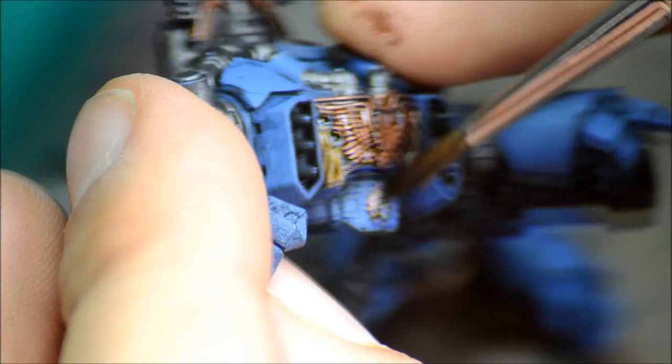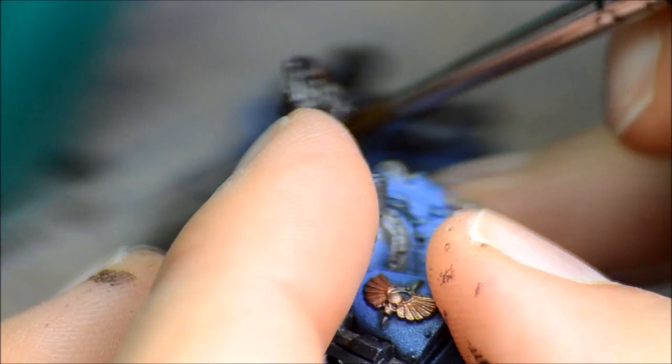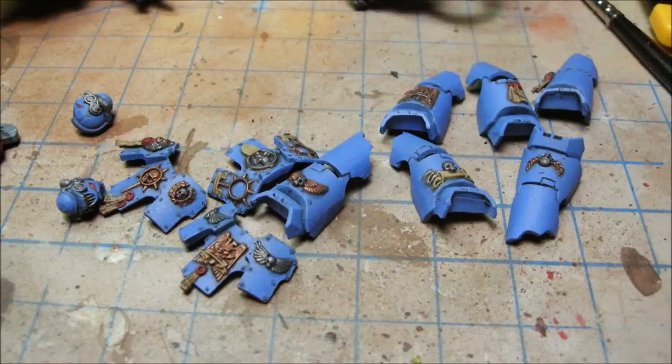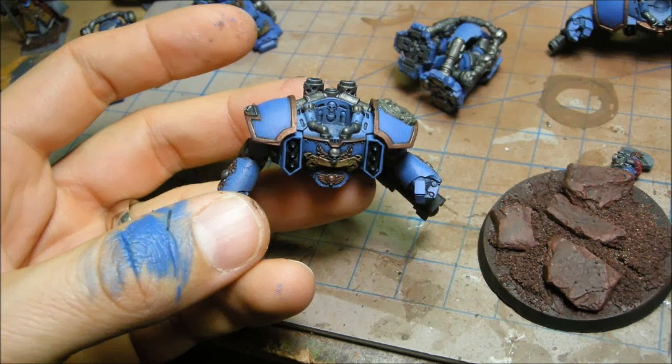On the arms as well and the backpack with the smokestacks. I'm using Agrax Earthshade here on all the gold areas as well as the parchment and the red bits. Just to do that all in one nice quick step. So that's all the base colors and shades.